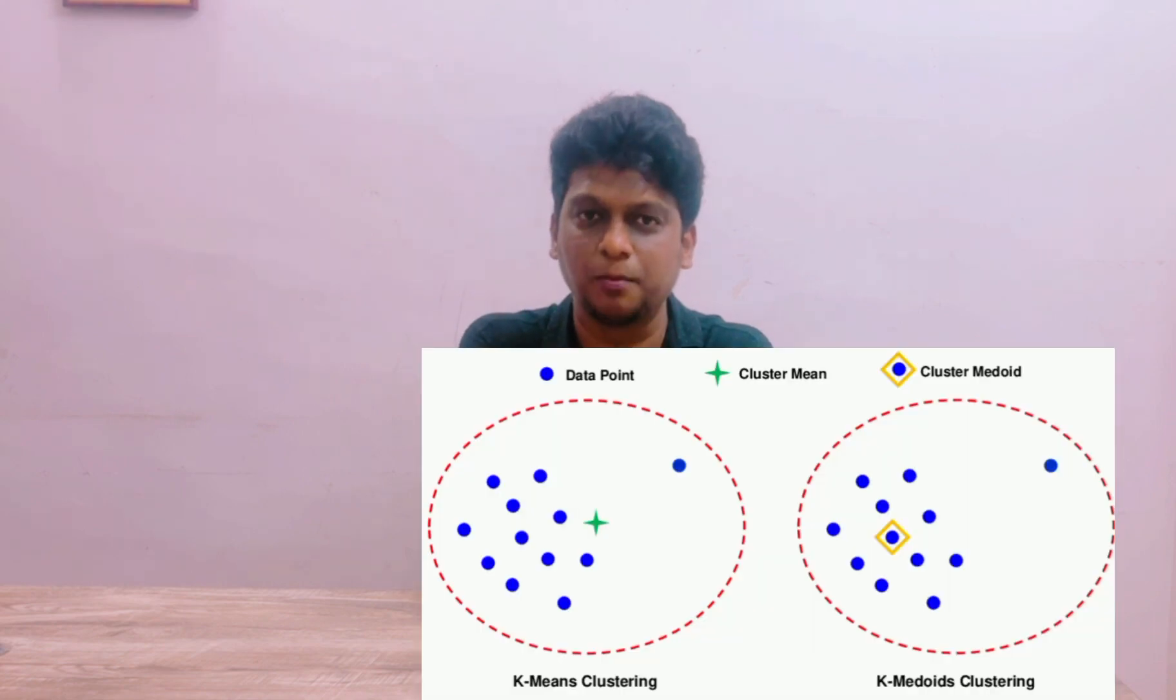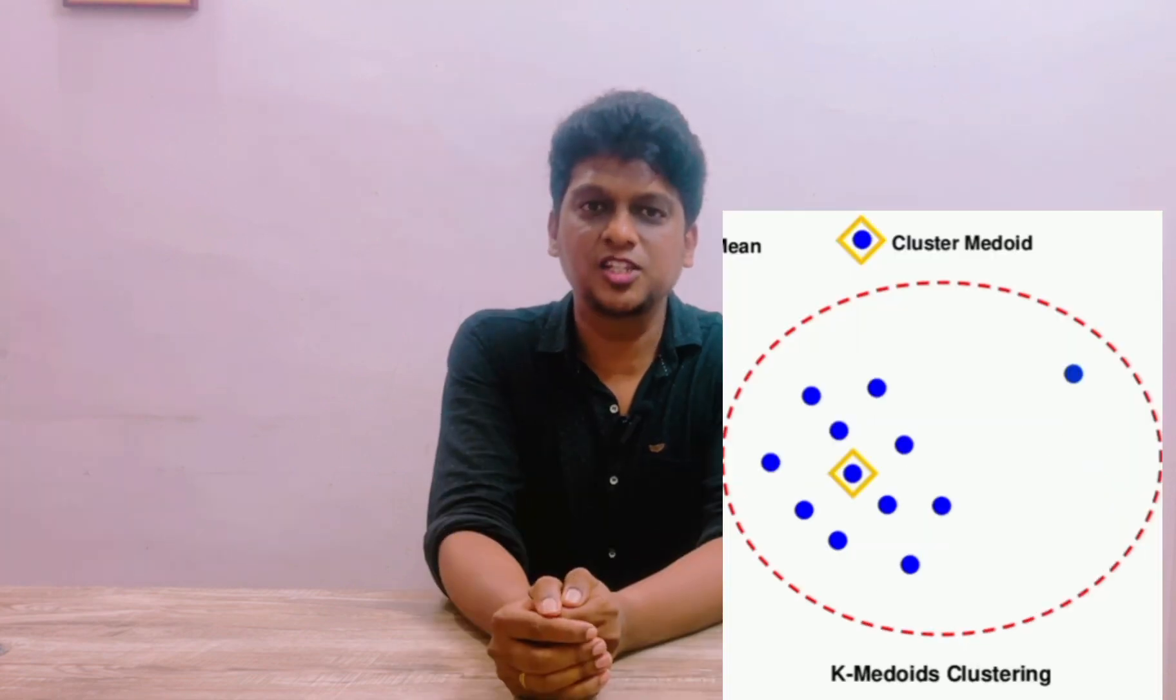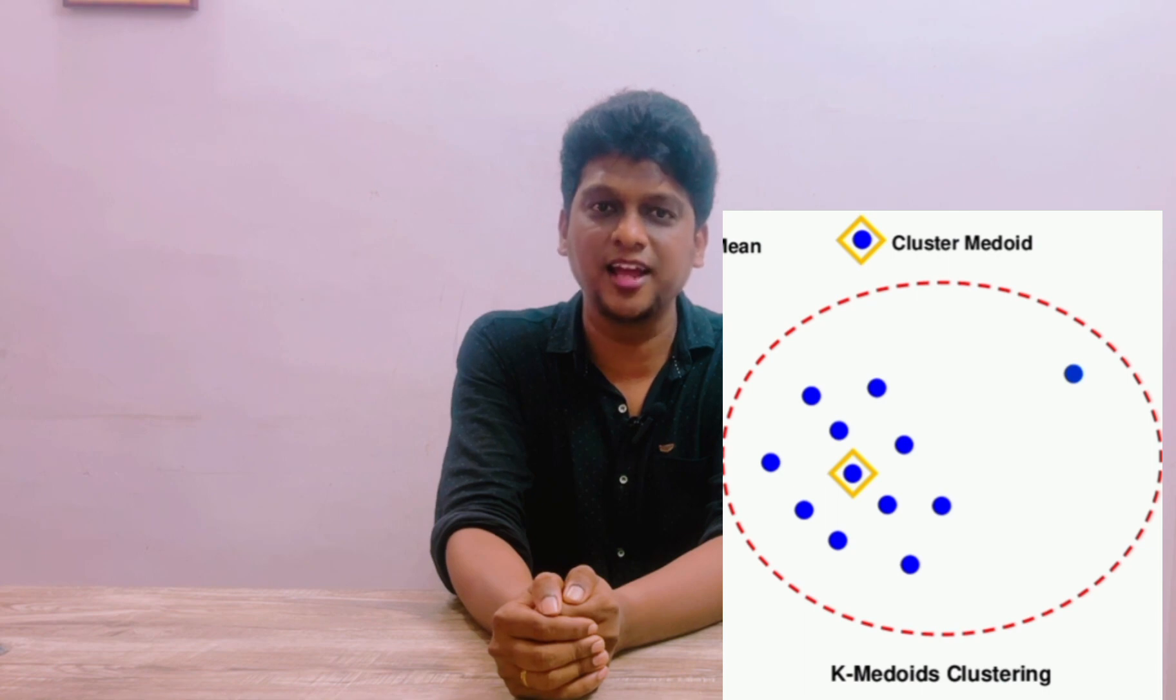Welcome to you all. Today we will see about K-Medoid clustering algorithm. K-Medoid is a partitioning clustering algorithm similar to K-Means cluster algorithm. But instead of taking mean here we are going to take Medoid. Medoids are the most centrally located points in a cluster and they minimize the dissimilarity to all the other points in a cluster.